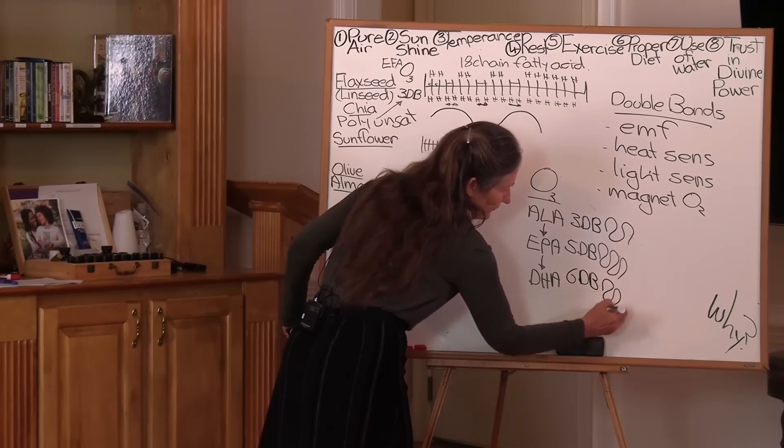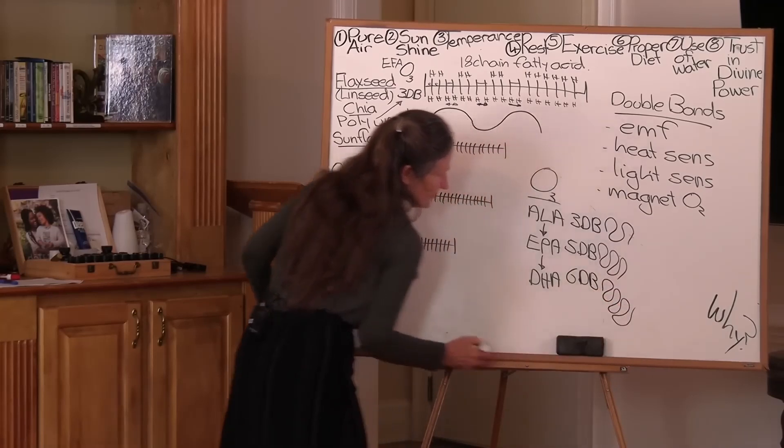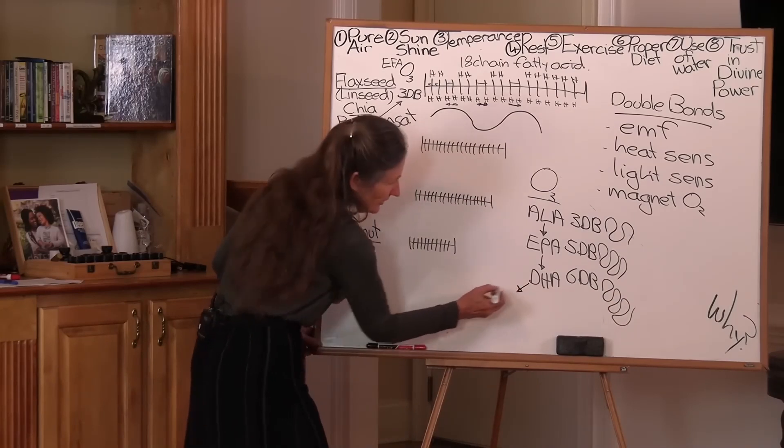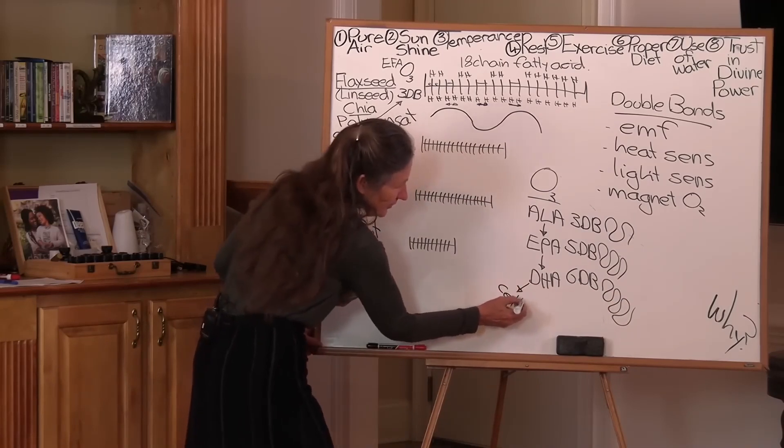So that's one, two, three, four, five, six. It's the most fluid and it is DHA that is used exclusively by the body for cell membrane function and repair.